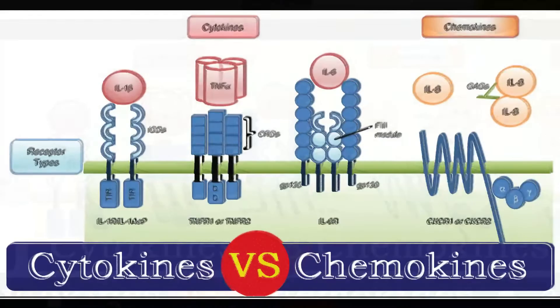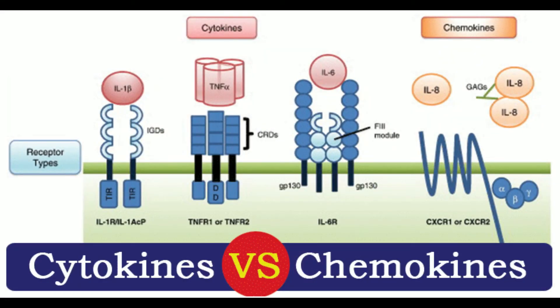3. Size: Cytokines are approximately 5–20 kDa. 4. Classification: Cytokines include chemokines, interferons, interleukins, lymphokines, and tumor necrosis factor. Chemokines have been classified into four main subfamilies: CXC, CC, and CX3.